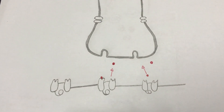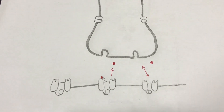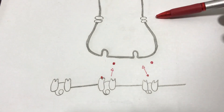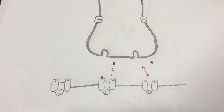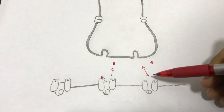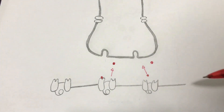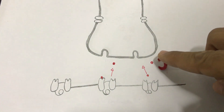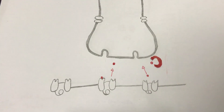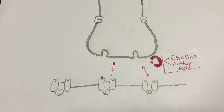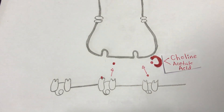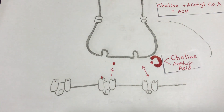Now let's see what happens after contraction. After contraction occurs, acetylcholine will detach from the sodium-gated channel and move back into the synaptic cleft. A special enzyme called acetylcholinesterase will break down the ACH into two molecules known as choline and acetic acid. Choline can be recycled and combined with acetyl CoA to produce ACH again. So this process keeps going again and again.